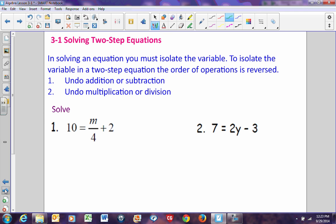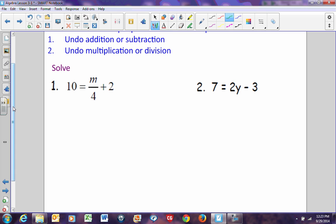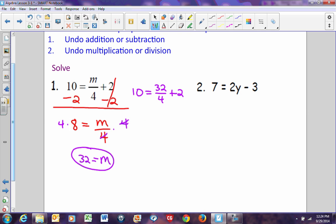So here, we need to undo addition or subtraction first. Always. If you don't, you're going to end up with some really ugly fractions. Then, you undo multiplication or division. So we look at our first example: 10 equals m/4 plus 2. Undo addition and subtraction. We need to get rid of the 2 first. So we'll subtract 2 from this side, subtract 2 from this side. These two 2s cancel. 10 minus 2 is 8 equals m/4. Now, to solve for m, we'll multiply both sides by 4. This will cancel, leaving me with m. And 8 times 4 is 32. You can check: 32 divided by 4 is 8, so we have 10 equals 8 plus 2. That does indeed check.